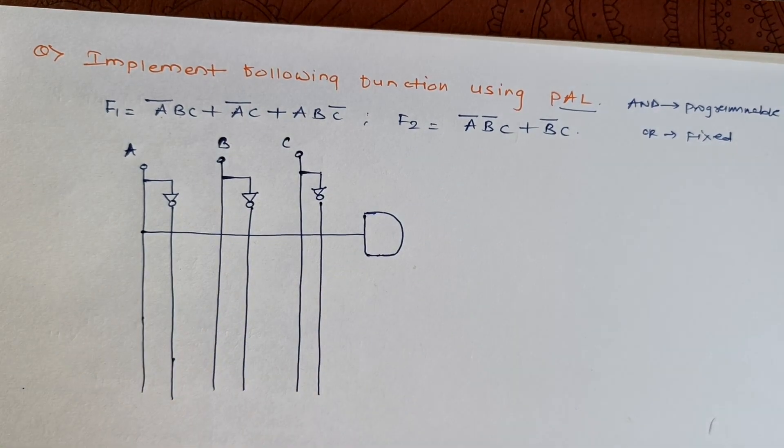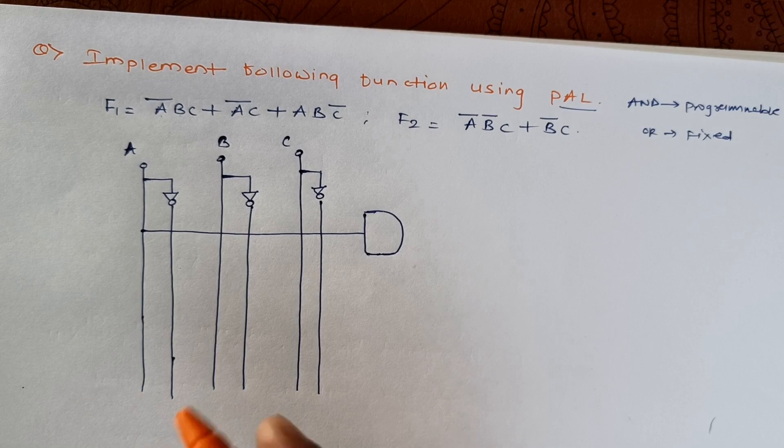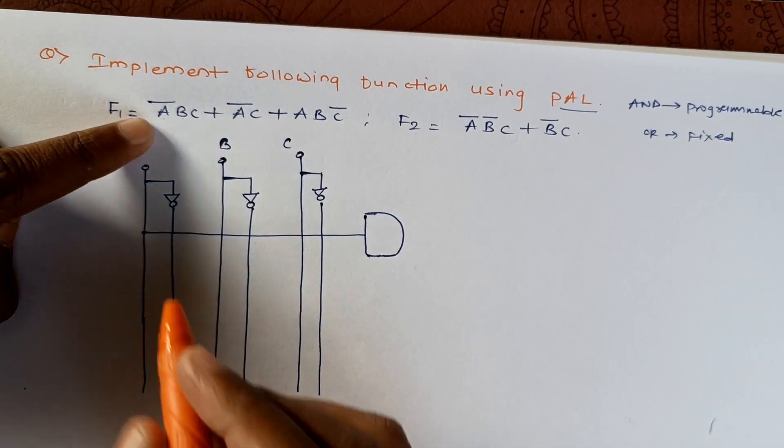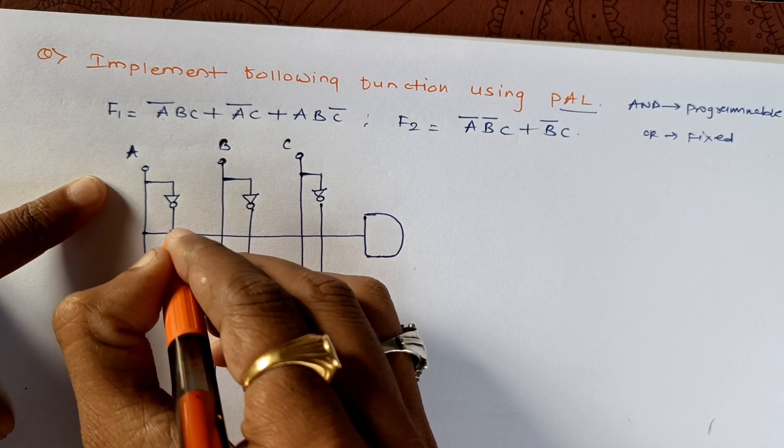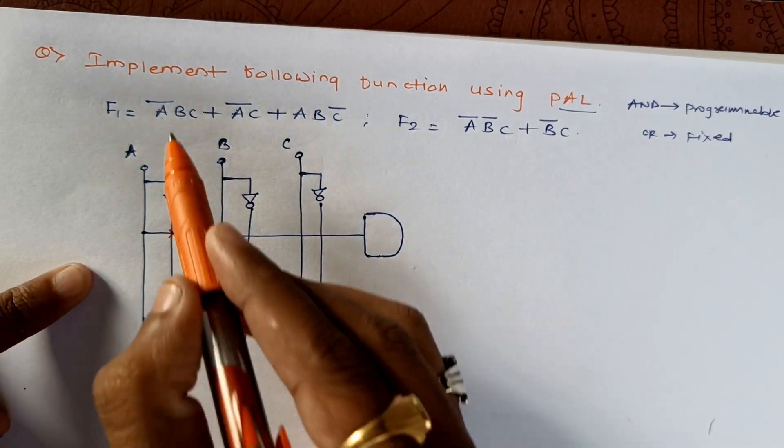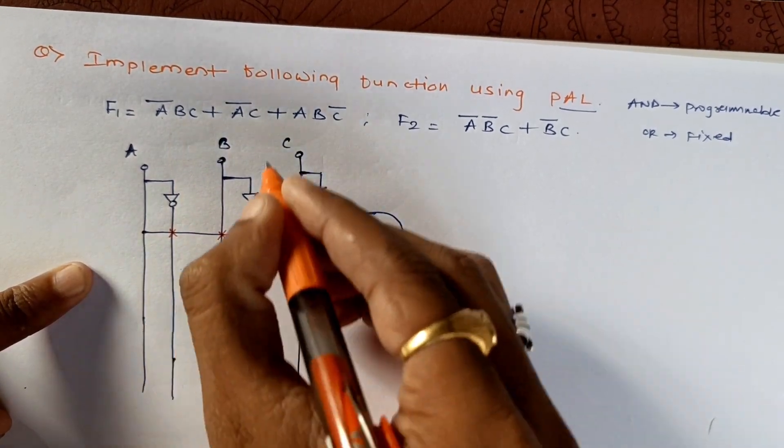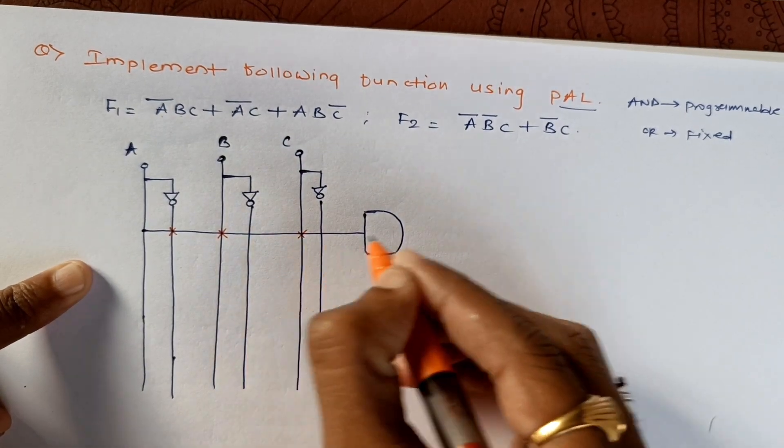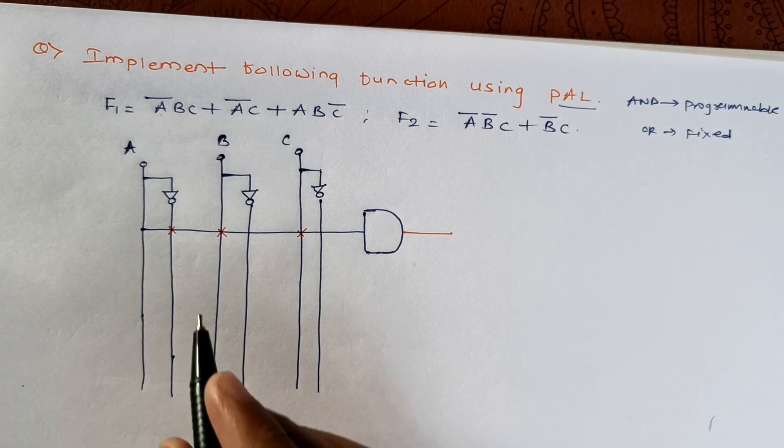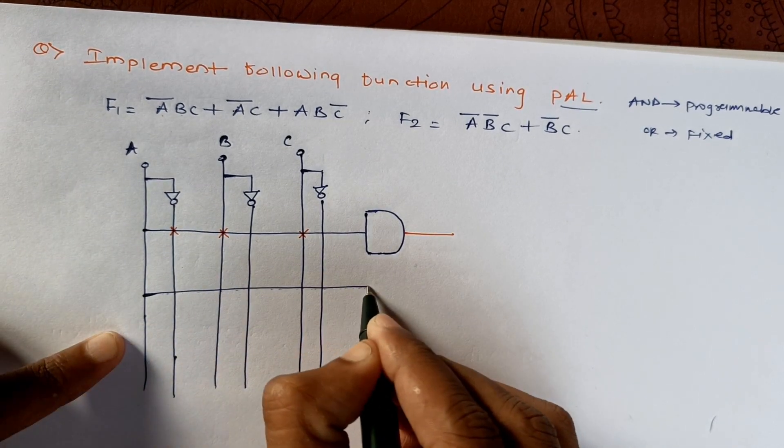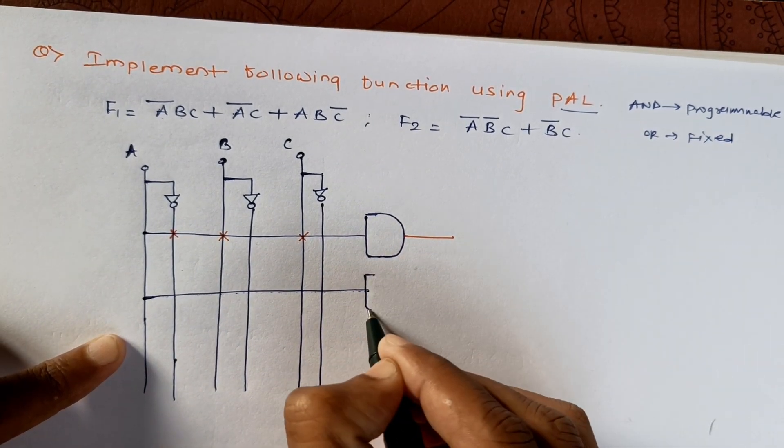Now in this case, the AND gate must be programmable, so we will connect or we will fuse the terms. We connect A bar, second is B, and third is C. So this will be our A bar B C. Similarly, we will take AND gate combinations in the same manner.